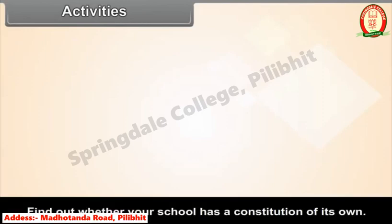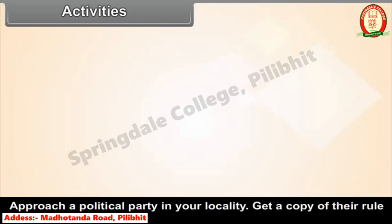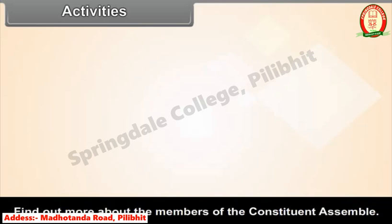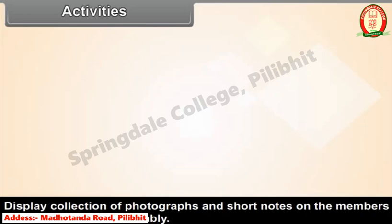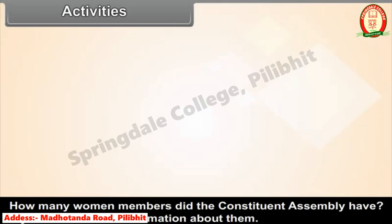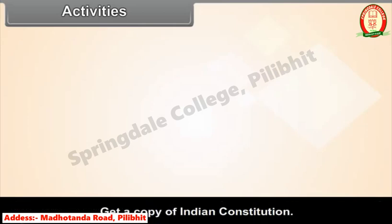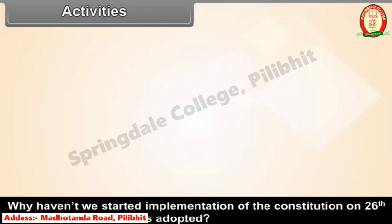Activities: Find out whether your school has a constitution of its own. Approach a political party in your locality and get a copy of their rule book. Find out more about the members of the Constituent Assembly, including its different committees. Display a collection of photographs and short notes on its members. How many women members did the Constituent Assembly have? Get a copy of the Indian Constitution and prepare a constitution for your class. Why was the Constitution not implemented on 26th November when it was adopted?